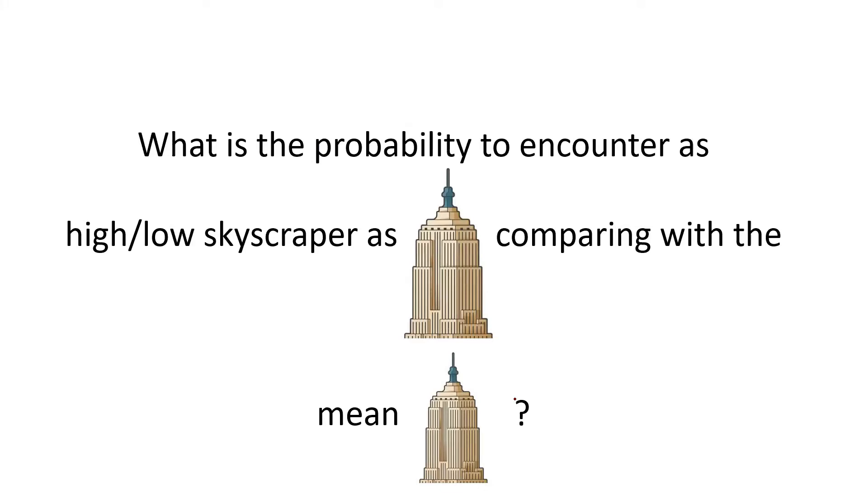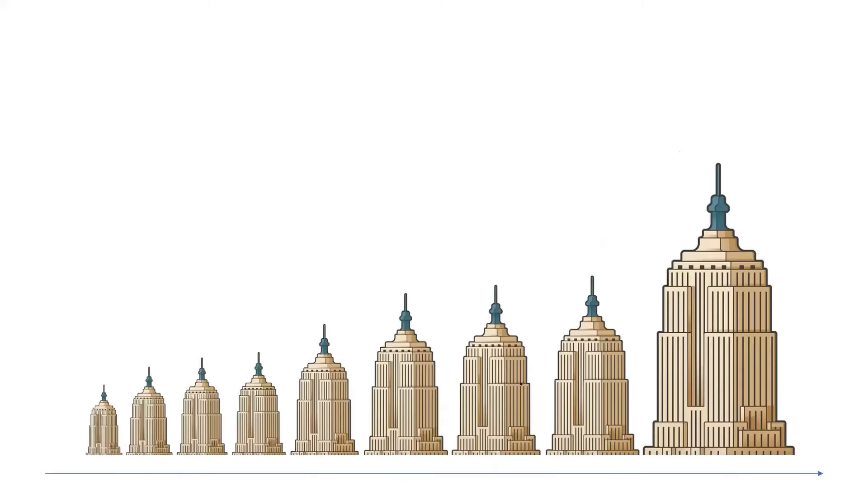And then this is the question that we are formulating when we are asking about the p-values. Like what is the probability to encounter as high or as low a skyscraper as, for example, this one here, comparing with the mean, that is this one. And you can ask me how did I know that this one is the mean? So I have just made a trick of ordering the skyscrapers. So let's imagine that these are all our observations that we have, this is all our population. And then this skyscraper occurs to be the main one. So this stays in the middle. And this one, we suddenly encounter it.